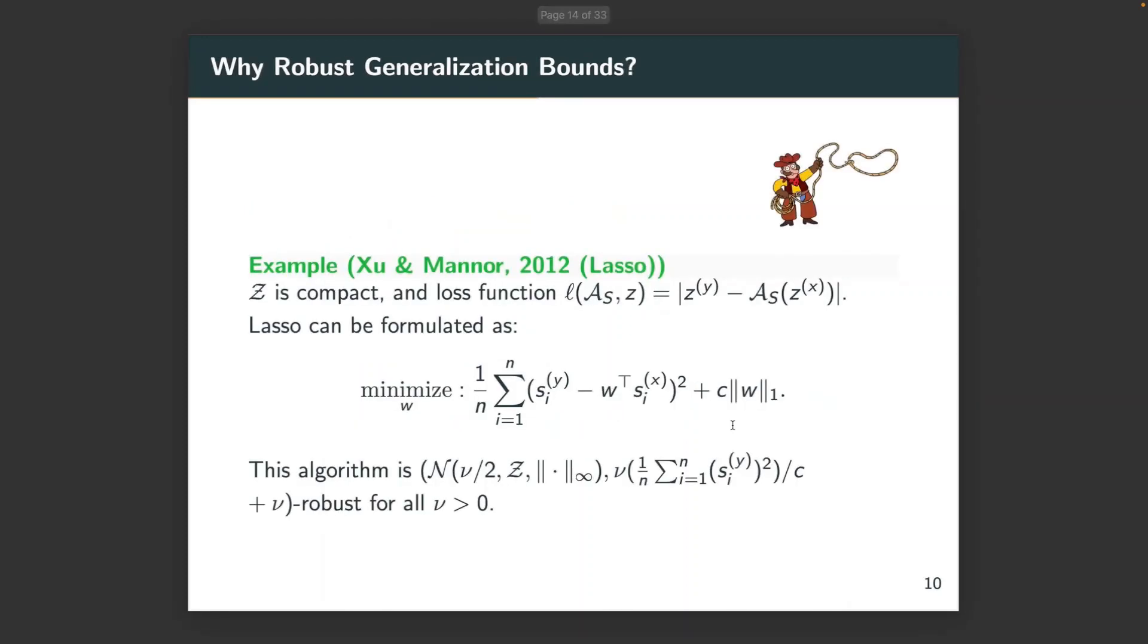We here also mention some application of the robust generalization bounds. The first example is Lasso. Lasso is a workhorse of modern machine learning. Specifically, if we assume the input space is compact and take the loss functions as the absolute difference between the Y-response and the output of the algorithm A on X component, the optimization can be formulated as regularized empirical risk optimization with L1 penalty of the parameters. I want to remark the number of partitions is the covering number of Z under the L-infinity norm. This quantity is exponential to the input dimension of Z.